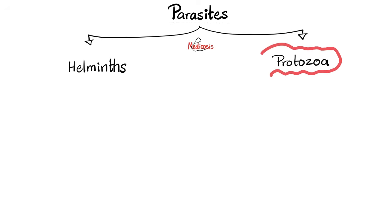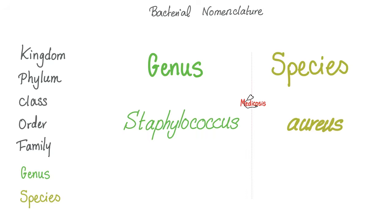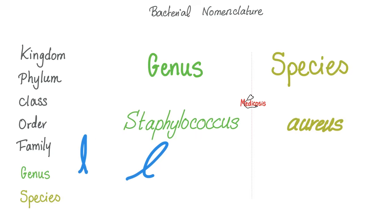Chagas disease is caused by a protozoa known as Trypanosoma cruzi. When we say Staphylococcus aureus, 'Staphylococcus' is the genus and 'aureus' is the species. Similarly, here's Trypanosoma cruzi. The names of bacteria, fungi, and parasites are written in italics, but the names of viruses are not written in italics.